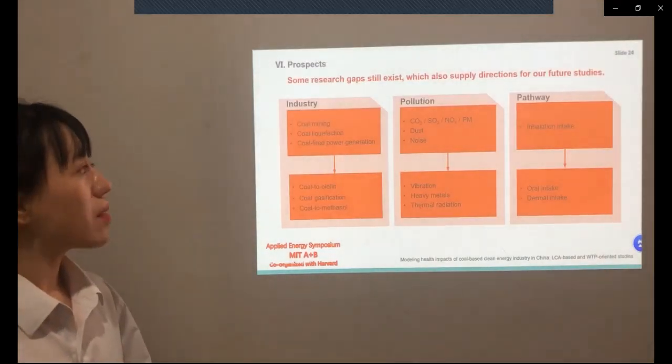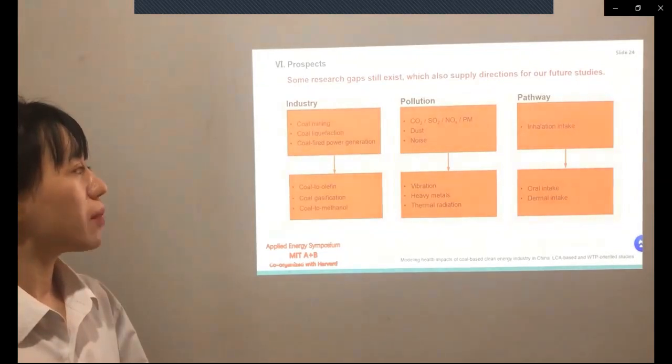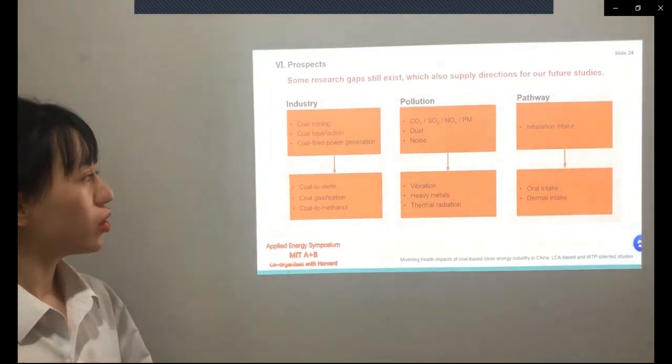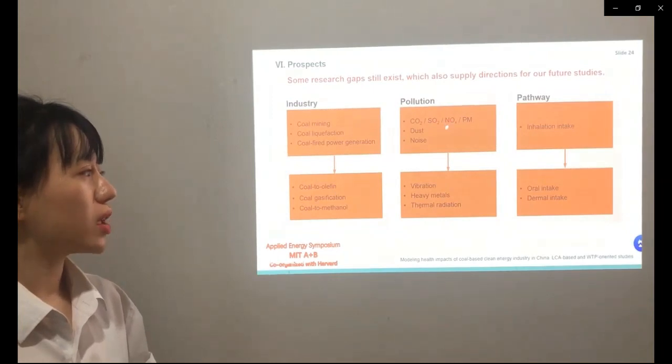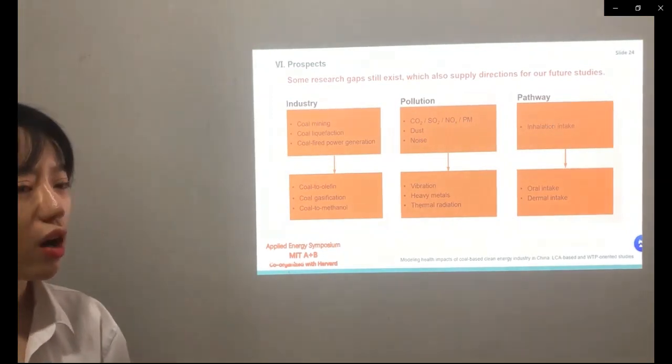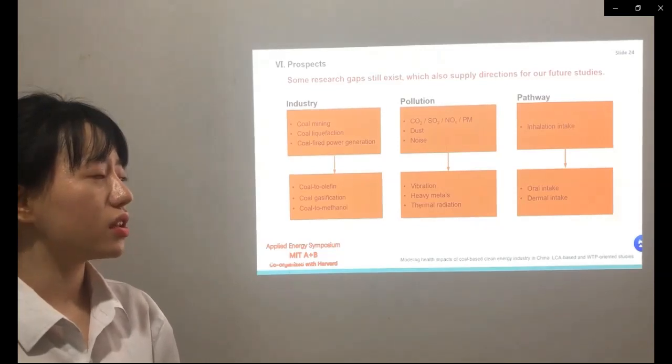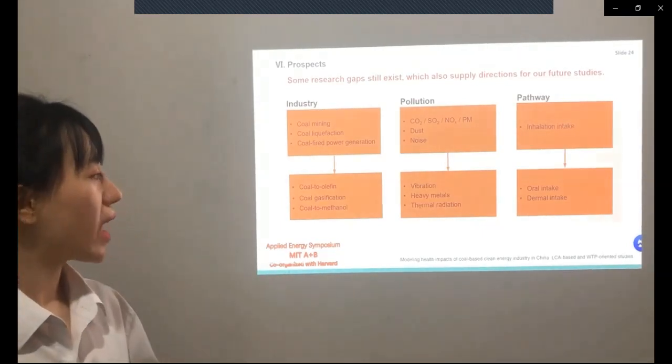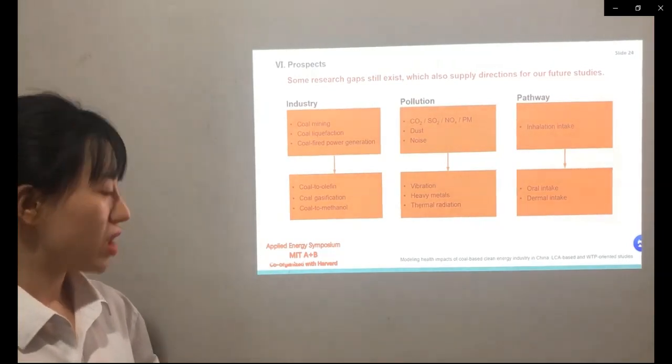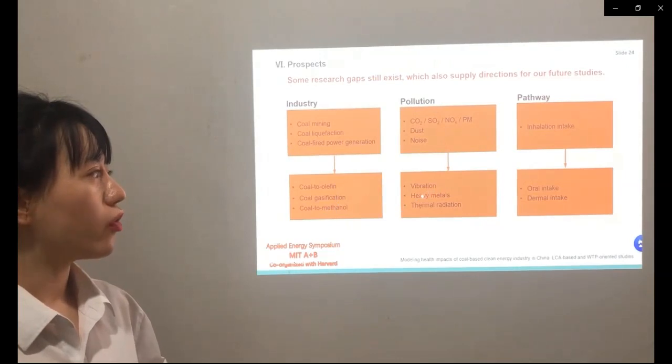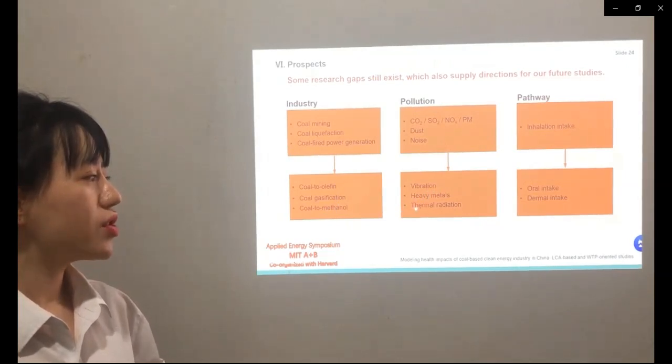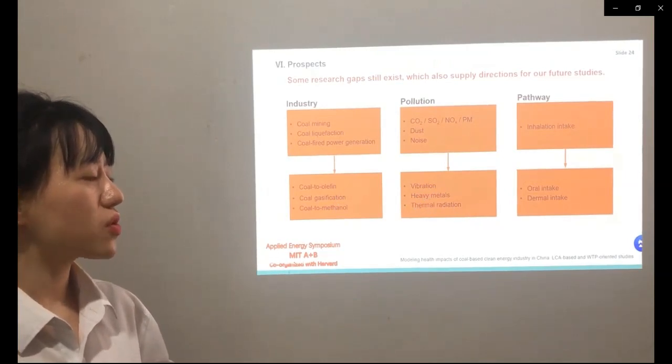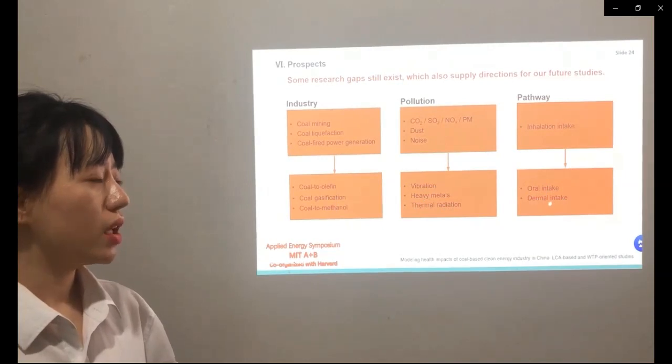However, some gaps still exist in our research. For example, we just considered coal mining, coal liquefaction, and coal-fired power generation. Environmental pollutions such as particulate matter, dust, and noise are considered. As for the exposure pathway for airborne pollutants, we usually consider inhalation impact. Thus, in the future, to deepen and expand our studies, we will discuss more kinds of coal-based clean energy industry, such as coal gasification. More kinds of environmental pollution would be included, such as vibration and thermal radiation. The exposure pathways such as soil impact and dermal impact would be included as well.